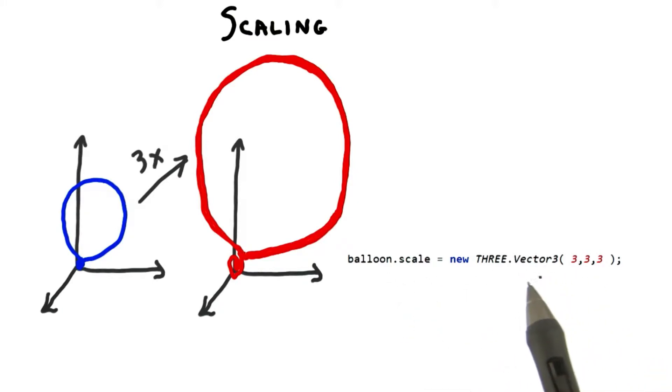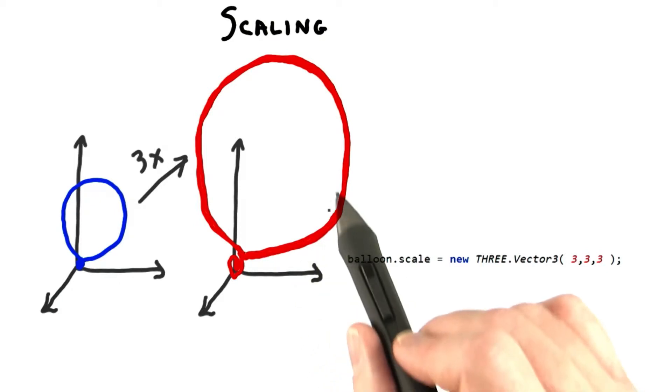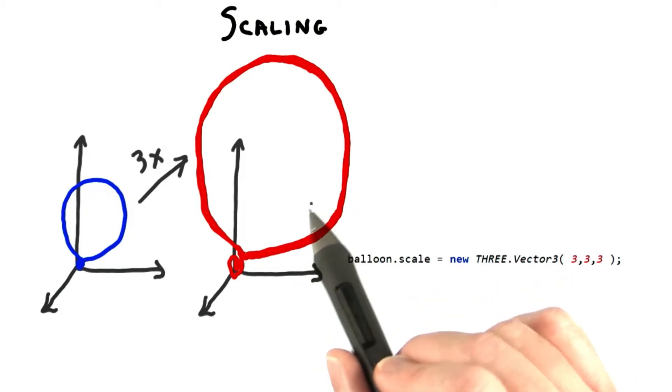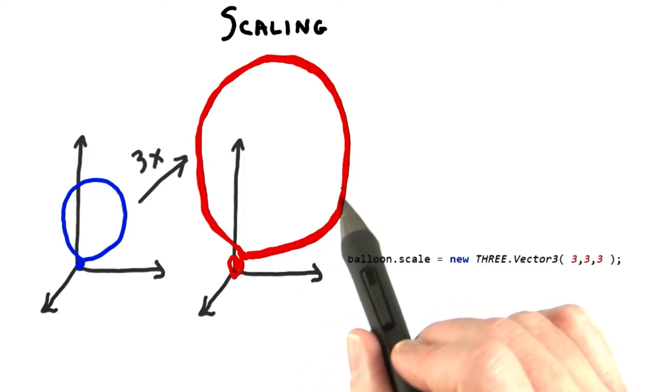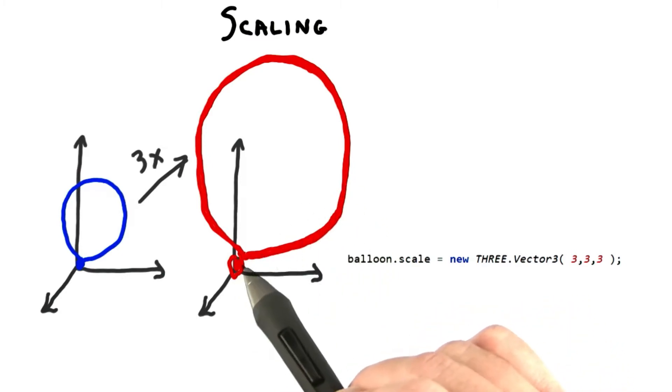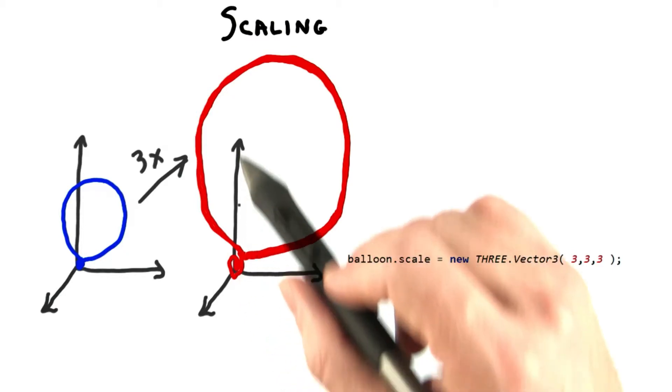Here's the code to make a balloon object three times as large as it was before. Note that unlike real life, this makes the balloon three times larger in all ways: the thickness of the skin, the part where you seal it off, and so on. Like rotation, scaling is done with respect to an origin. Since the valve of the balloon is at the origin, the valve will stay still and the balloon will expand upwards.